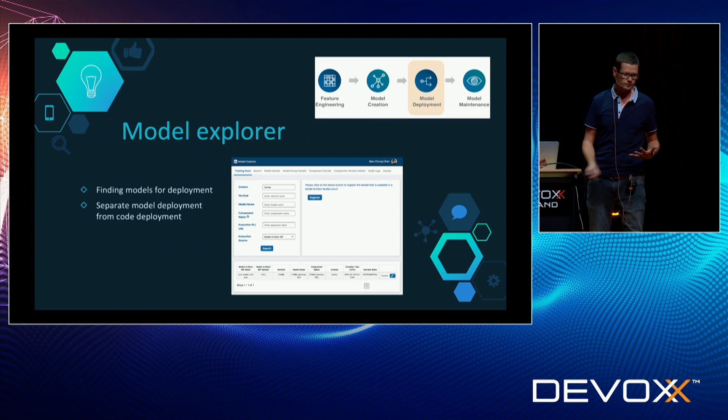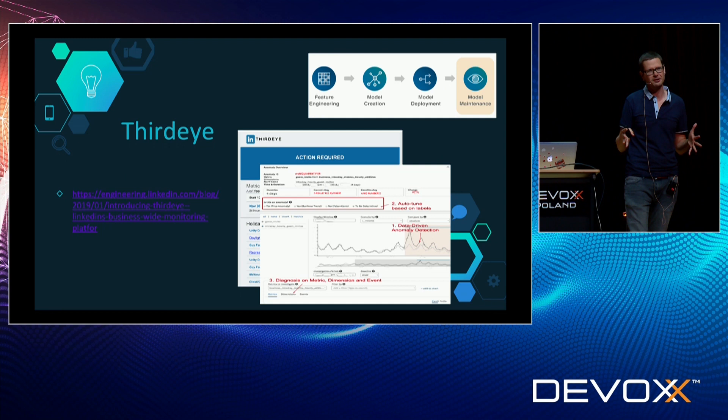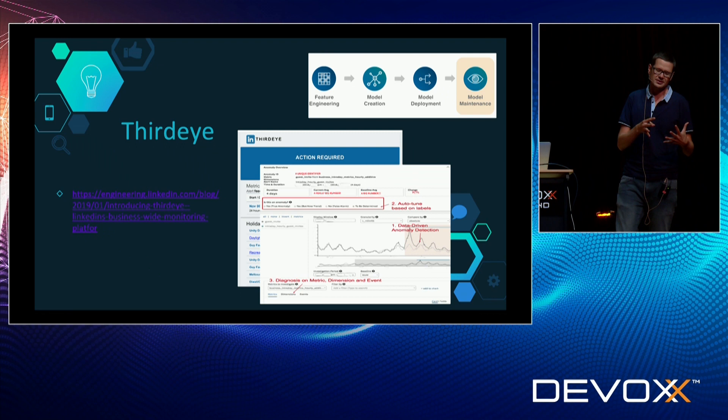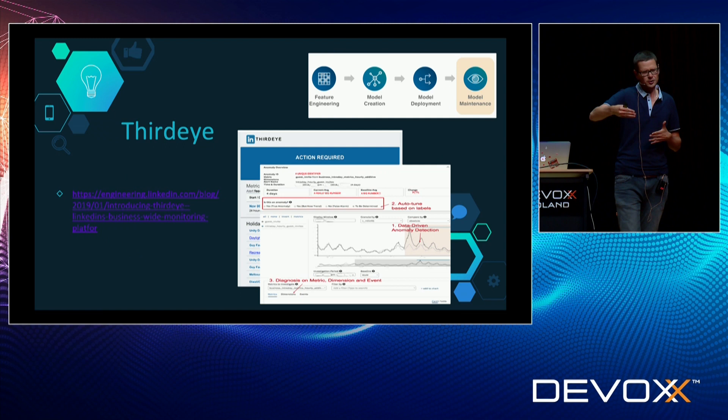For model maintenance, one tool I want to mention is ThirdEye — our standard monitoring platform that allows us to be data-driven and identify anomalies. If there are changes happening, we want to get notified and react quickly. This is part of the model maintenance work.